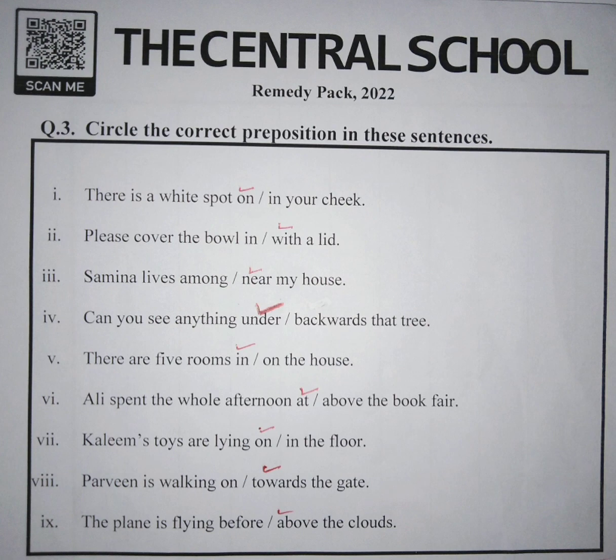The correct preposition is 'towards' as it is directing the location of someone towards the gate. Our last sentence is: the plane is flying above slash before the clouds. Here, the correct preposition is 'above' as it is showing the location of the plane that is flying above the clouds.